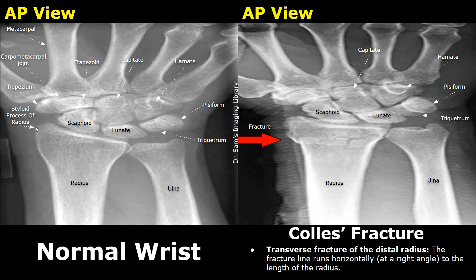The image on the right shows a distal radius fracture. A horizontal crack is present in the bone — this is the fracture line. It runs horizontally at a right angle to the length of the radius. This type of fracture is a transverse fracture.